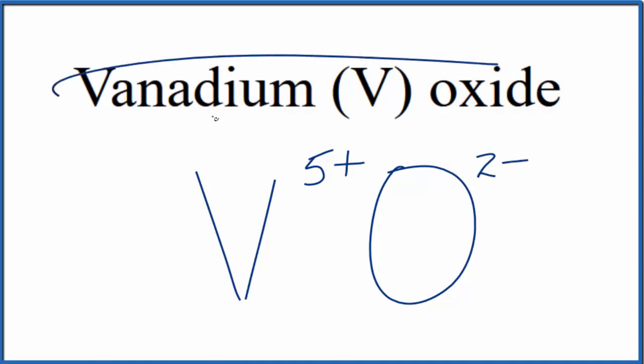And because this vanadium five oxide, it's a neutral compound. It doesn't say ion after it. These charges, they need to add up to zero, which is a little challenging.